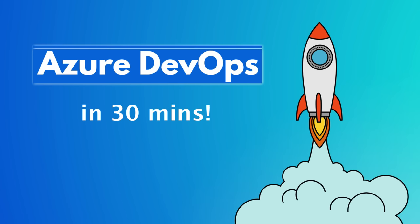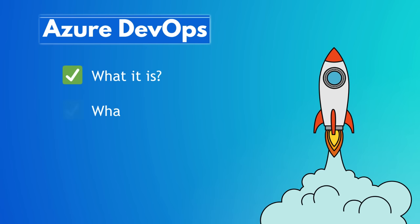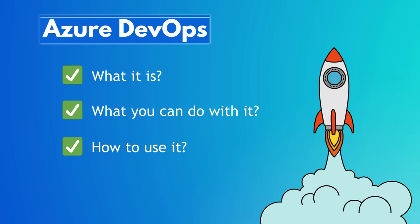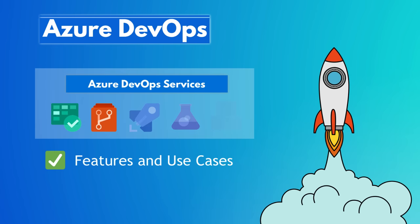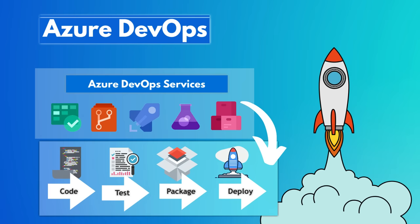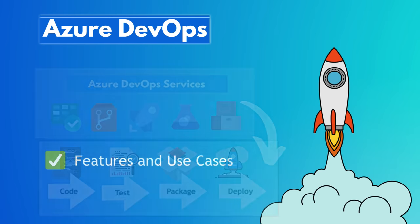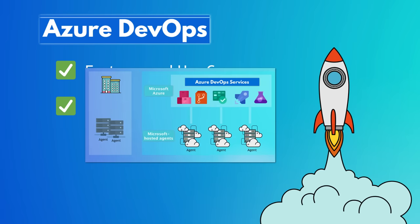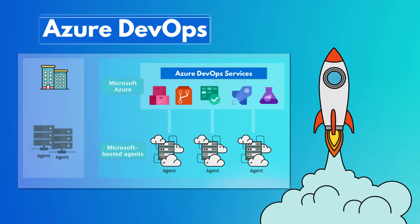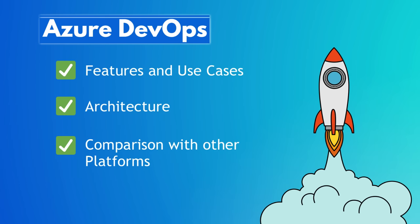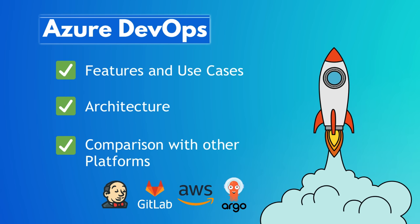In this video, we will learn about one of the popular DevOps platforms called Azure DevOps. We will see what it is and what you can do with it, how to use it for your software development projects, and how it is relevant for you as an engineer. We will see different features, use cases, how it all works, and how you can implement the whole software development and deployment lifecycle with it. We will also review the Azure DevOps architecture, compare it with alternative tools, and discuss which tools you need to learn for your career.